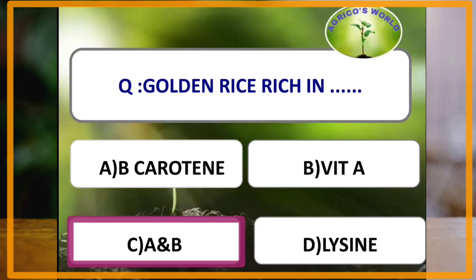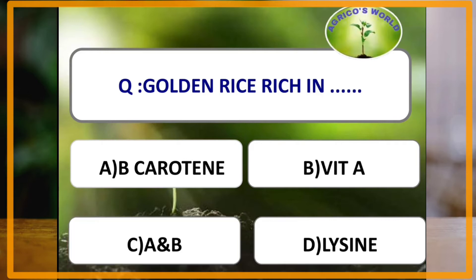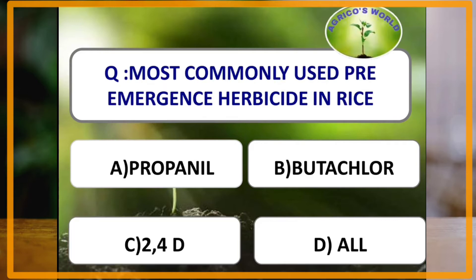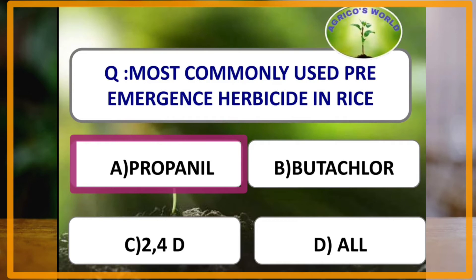Vitamin A deficiency can lead to blindness and premature death. Golden rice was developed to reduce vitamin A deficiency, so it is rich in vitamin A and beta-carotene. The most commonly used pre-emergent herbicide in rice is propanil, with trade name Stamp F34. Butachlor is a post-emergent herbicide used in rice.